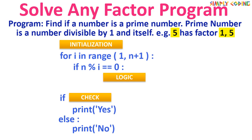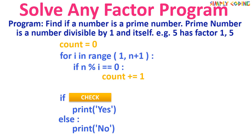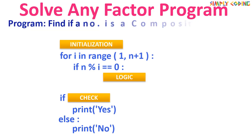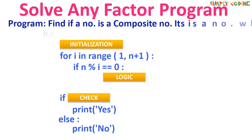In the initialization we write count and initialize it to zero. In the logic section, if the condition is true we just increment the count. In the check condition we check if count is 2; if yes, we print that the number is prime, otherwise it is not. Now let's solve another program using the same template.